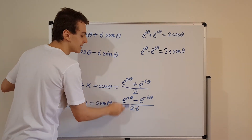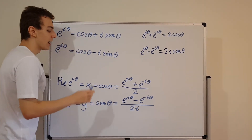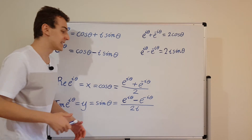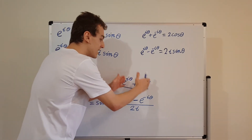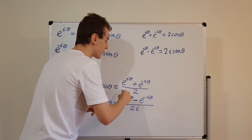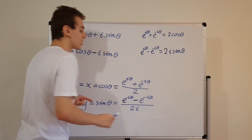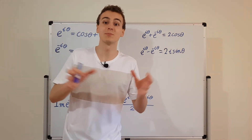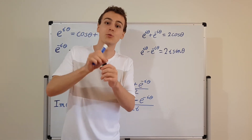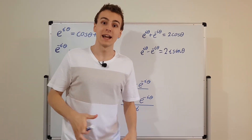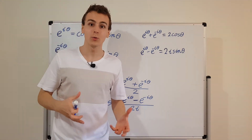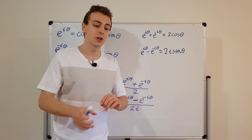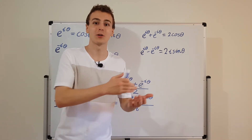Anytime you have complicated expressions with cosines and sines being multiplied or raised to powers, it's actually very easy to switch into this exponential form. This is much easier to work with because exponentials multiply elegantly using exponential laws, and raising exponentials to powers also uses exponential laws. Exponential laws are far more convenient than trigonometric identities, which can get very messy and require a lot of memorizing or looking up tables.